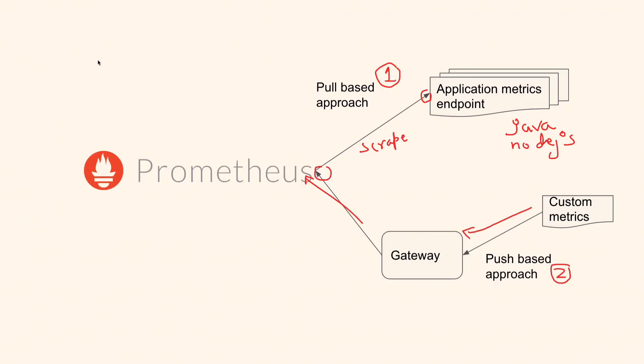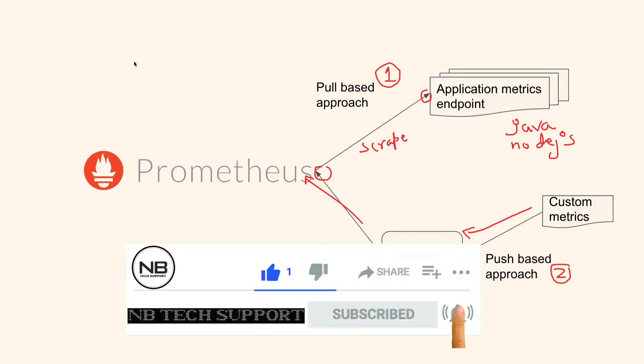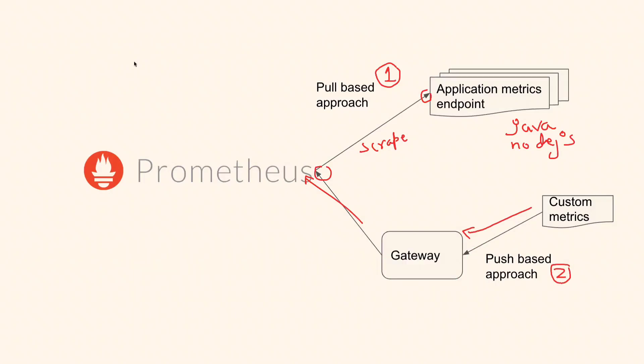So the answer is: Prometheus collects metrics in two ways — pull-based approach and push-based approach. Both approaches are valid, and based on the application design, we will use either one. If you are not aware of this tool, just tell them you have not used it and have used some other tool, and discuss that tool in the interview.